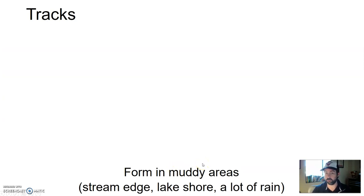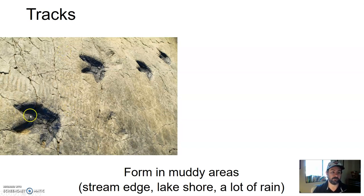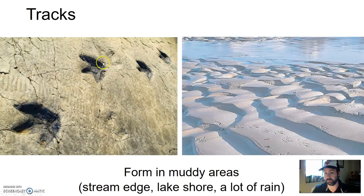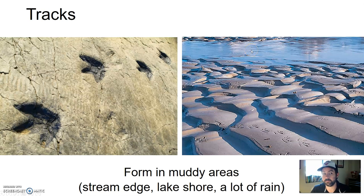Tracks and footprints typically form in muddy areas — stream edges, lakeshores, or places where there was a lot of rain. If I see this now — and there are some dinosaur tracks here, and if you look closely there are also ripple marks, so it's a two-for-one — where could a dinosaur walk to leave tracks like this? In the mud somewhere, just like we see tracks from this aquatic bird species in the mud next to a stream. What we see in the present informs us about the environment of the past.